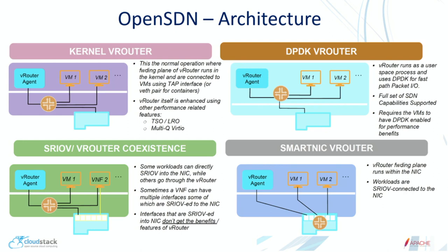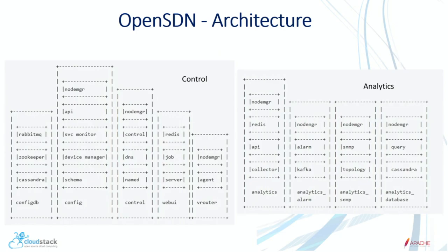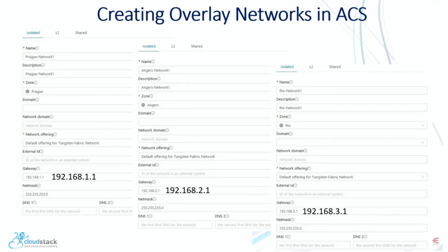It's all based on containers. The management database, everything, is a few dozen containers running on Docker, which makes it very, very agile. You can distribute your management plane across many dozens of hosts if you want. Let's see how it looks in CloudStack — the integration. I'm creating isolated networks in a zone backed by OpenSDN. They have different CIDRs because I want those to talk at some point. These are in three different data centers: Prague, Anger, and Rio. I actually built this at my office in Prague, my girlfriend's place in Anger, and my parents' place in Rio — it's all built over the internet.